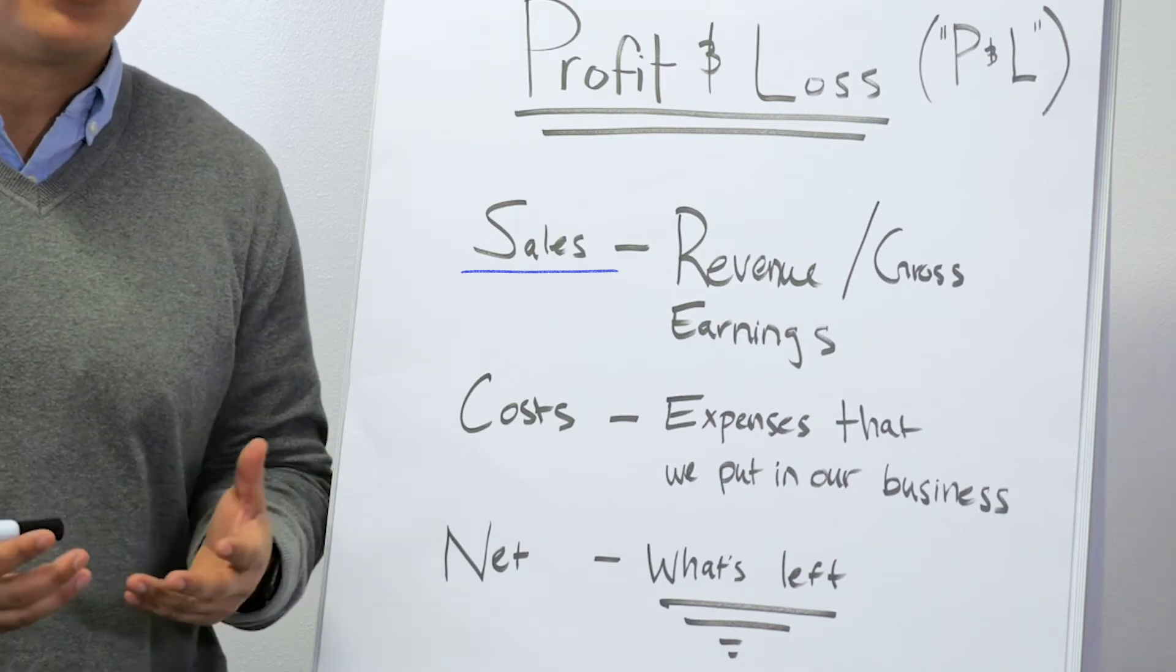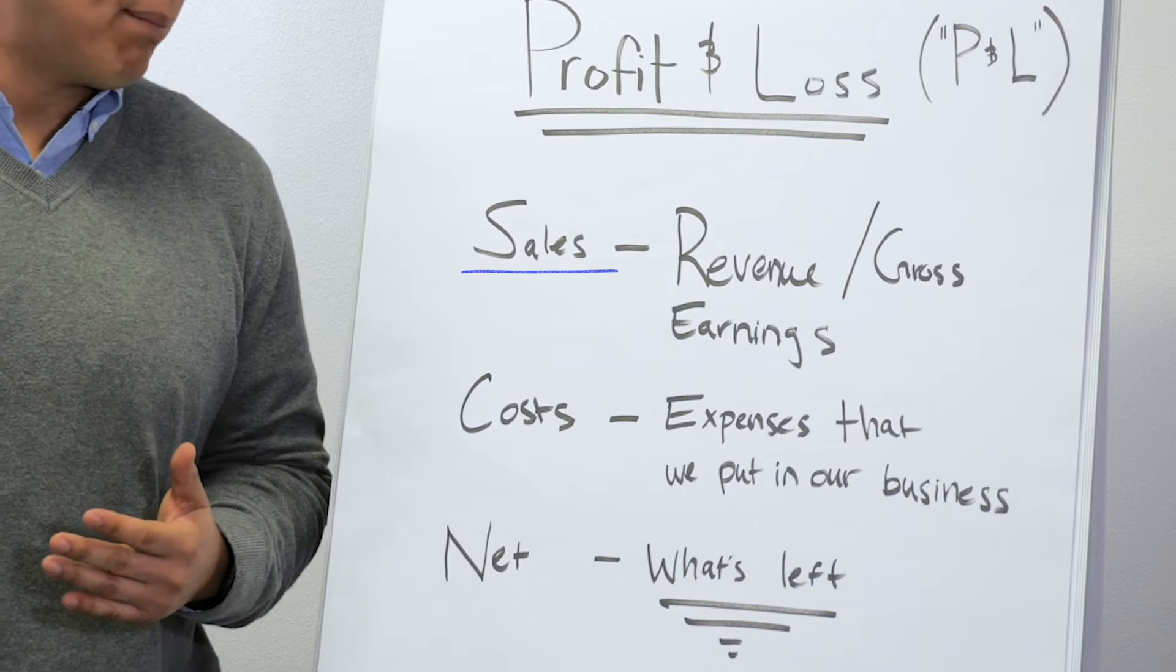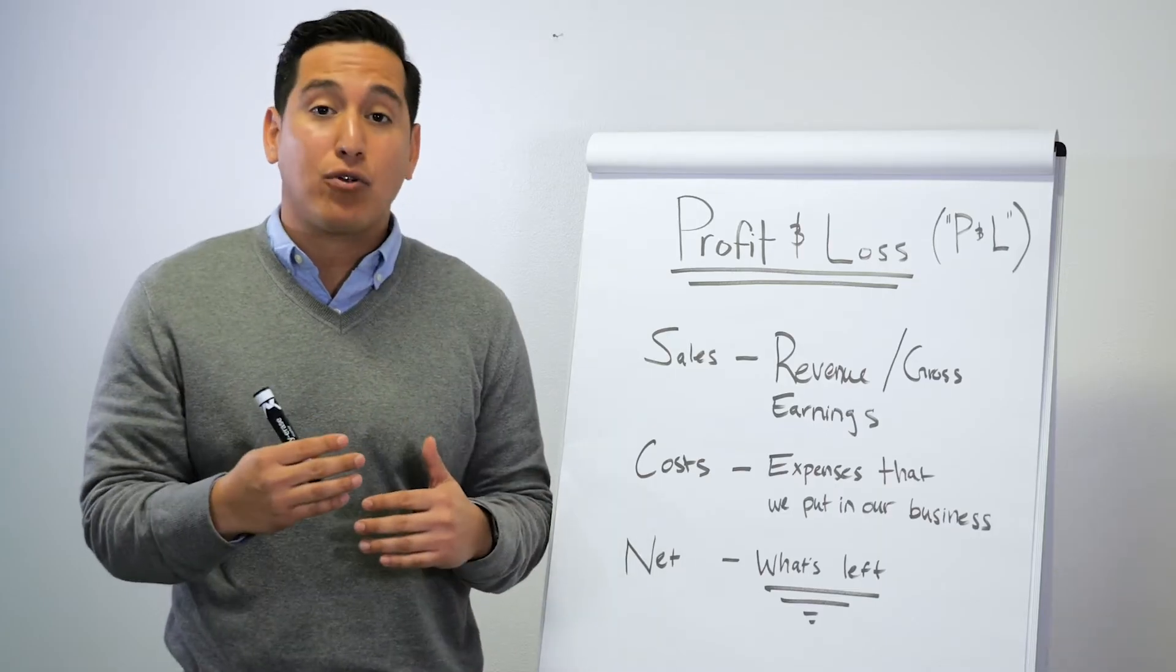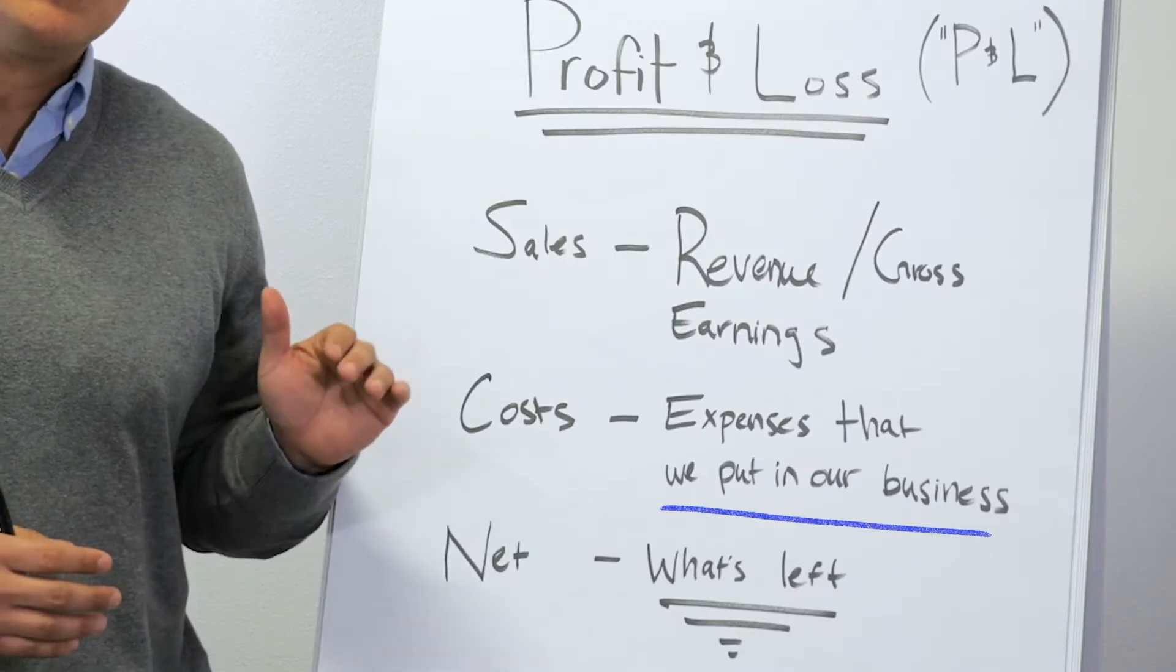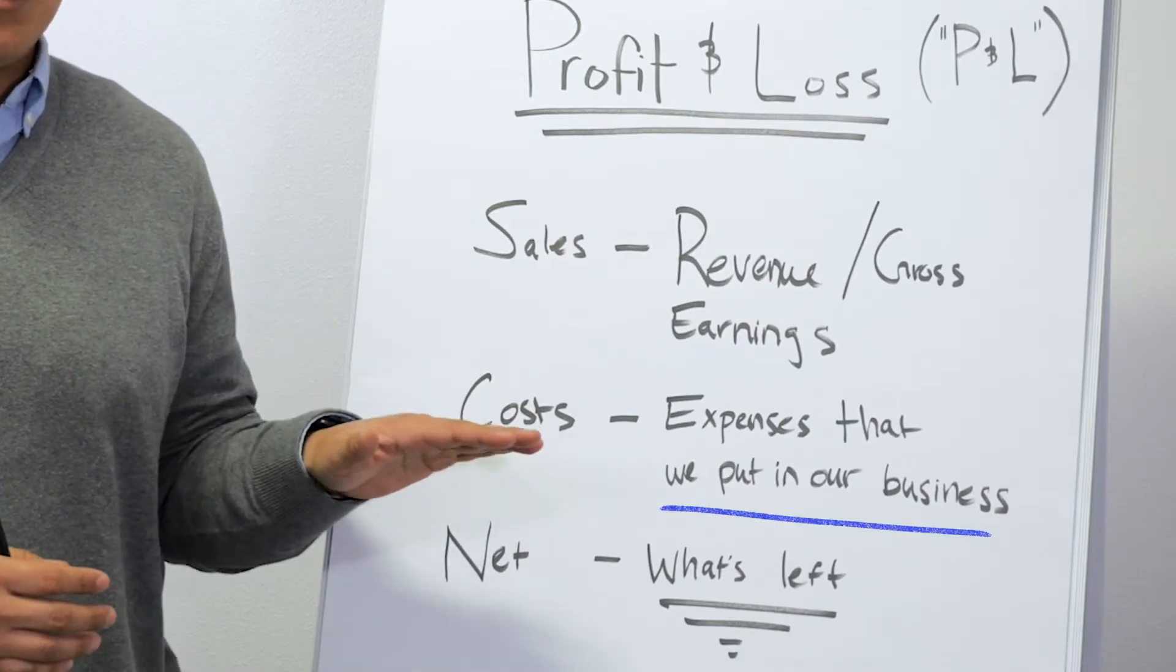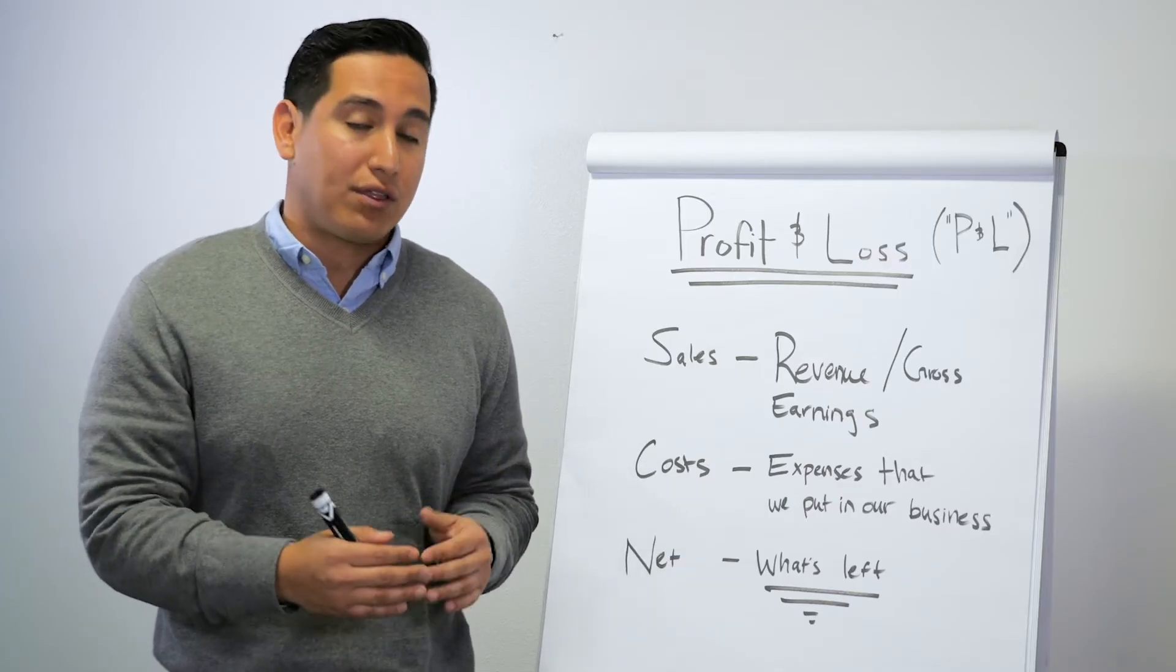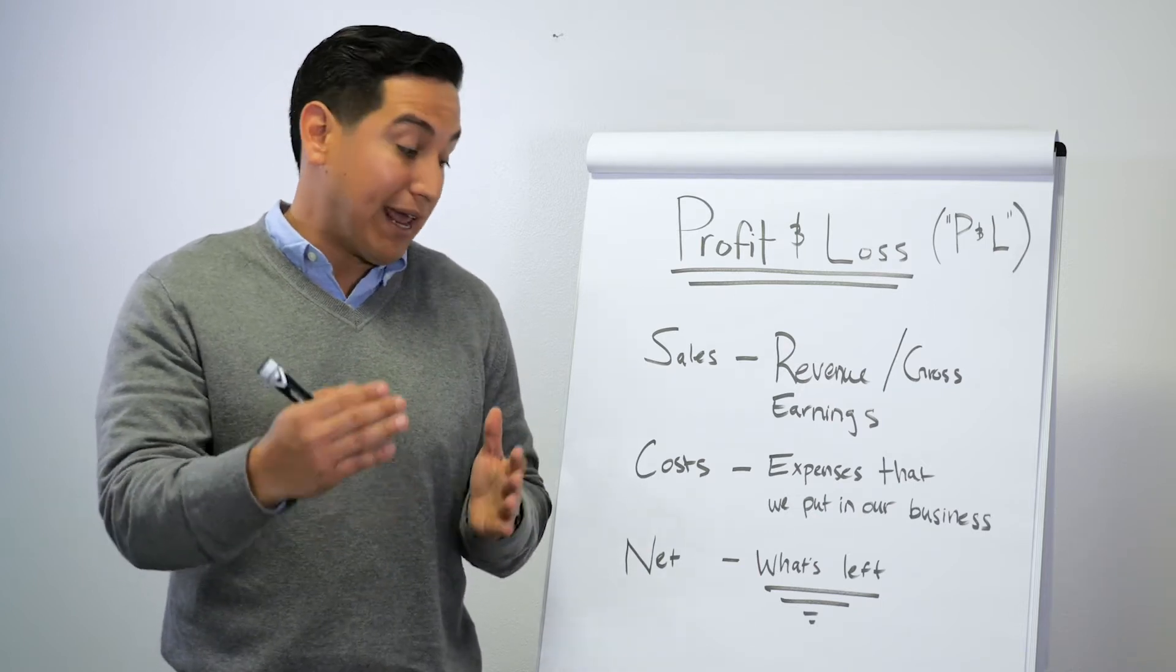Sales are going to be revenue or what's called gross earnings. Sometimes we call it top line. Then you're going to have costs, and we'll get into how costs are recognized within a business a bit later, but really it's any expense that is actually recognized in a business. Either that's going to be something that actually hits a bank account, or it's going to be something where an invoice is received and paid.